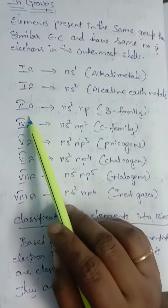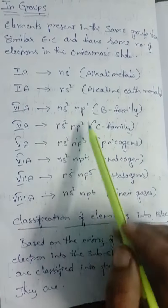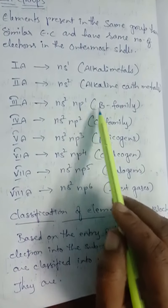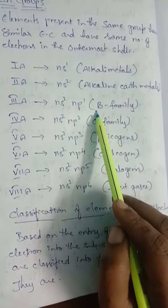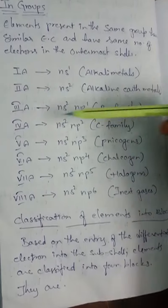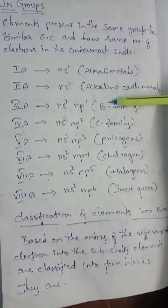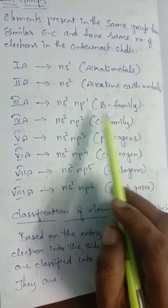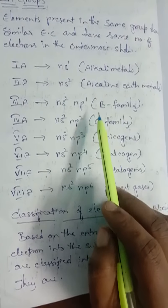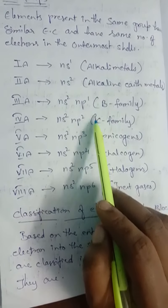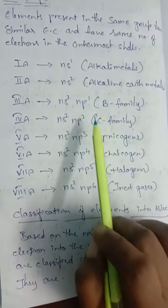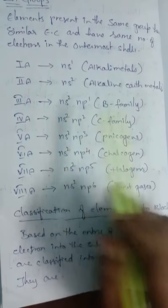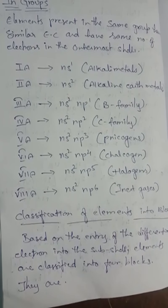The third group, 3A, has configuration ns2 np1, which is also known as the boron family. It is called the boron family because the starting element of this group is boron. The atoms of elements in group 3A have three electrons in their outermost shell, so the general electronic configuration is ns2, np1.